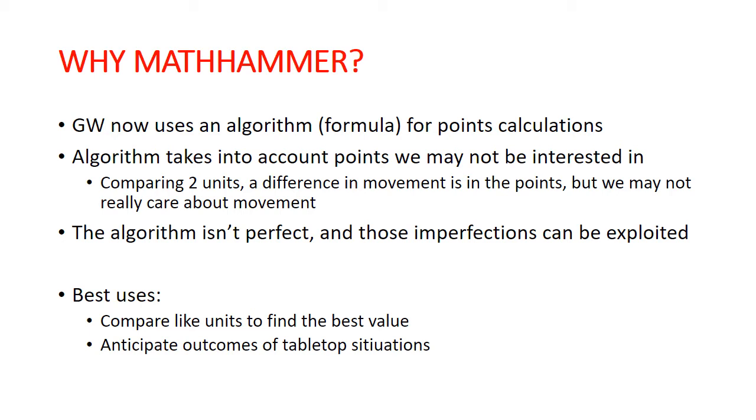Also, this algorithm is not perfect. You can't perfectly math out what all of these units do because there's so many really difficult to quantify aspects of a War Scroll. So we find imperfections in the formula, and we can use those imperfections to be exploits for us to find, for the specific things that we're looking for, what units may actually be under or over costed for the role that we're looking at.